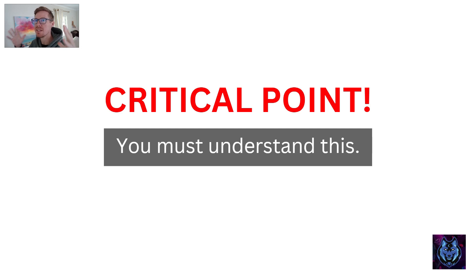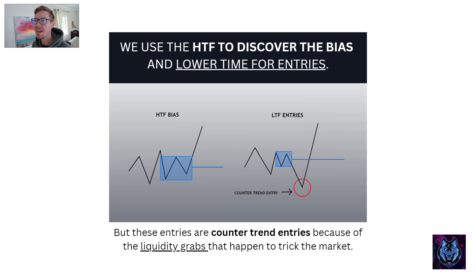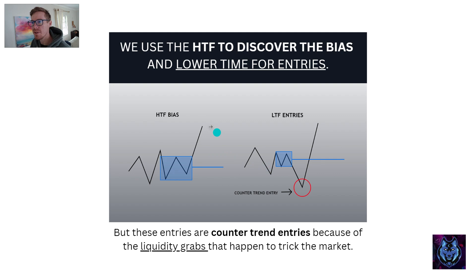Critical points you must understand about this strategy: we use the higher time frame to discover and determine the bias and direction, and the lower time frame is for our entries. If price is above the higher time frame contraction line or expansion line, then we are only looking for long entries on the lower time frame. Our entries are always counter-trend entries because we are anticipating liquidity grabs, which are designed to trick retailers into making a mistake, making liquidity available for large institutions to fill their massive orders. Once we know and can anticipate this, the strategy becomes easier.